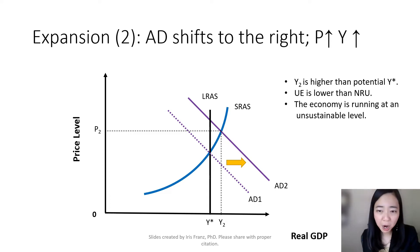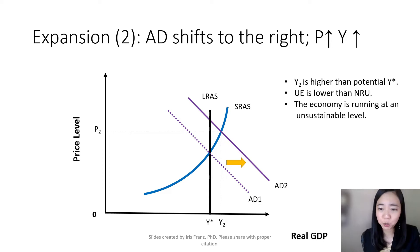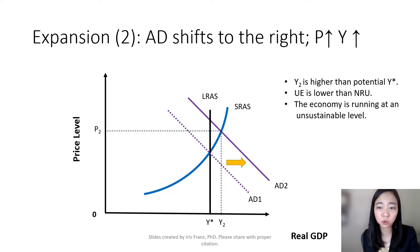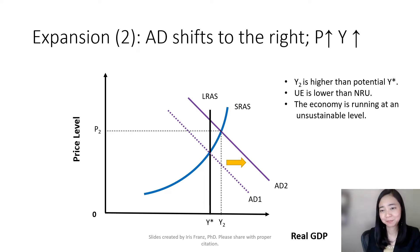So now our output, Y2, is higher than the potential output, meaning our unemployment rate is lower than the natural rate of unemployment.